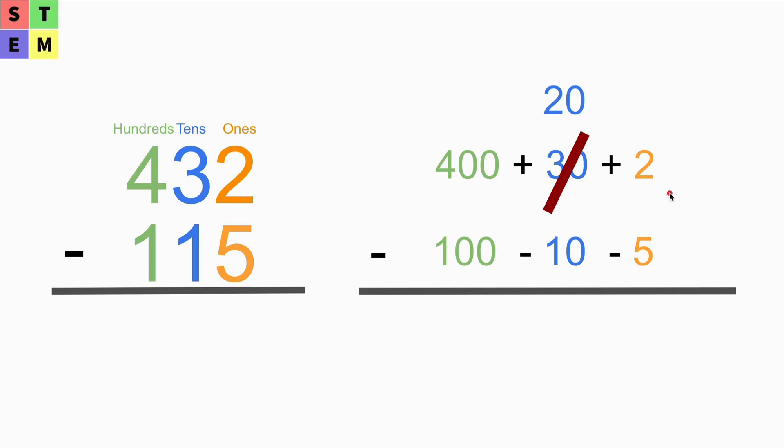Now the 2 becomes 12 at the ones place. So instead of 2, we have 12 here. Now we are able to use 12 minus 5, and we have 7 here.